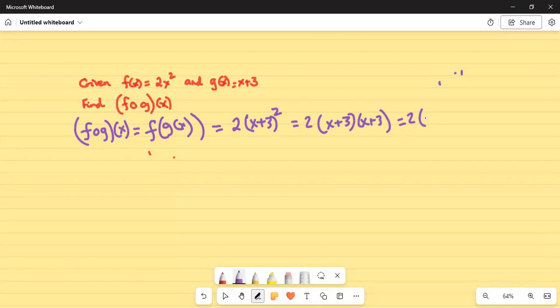FOIL—first thing first. First terms: x times x is x². Outside: x times 3 is 3x. Inside: 3 times x is 3x. Last: 3 times 3 is 9.